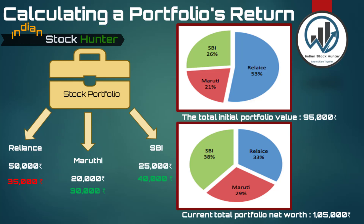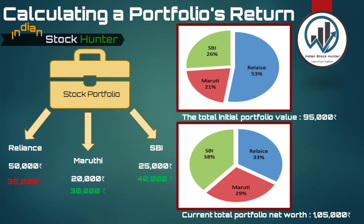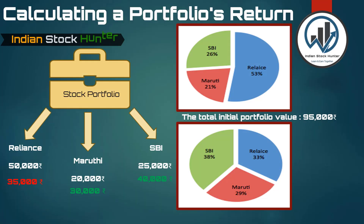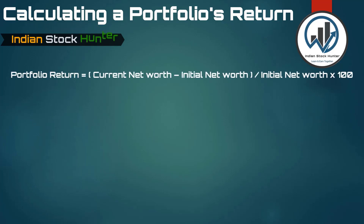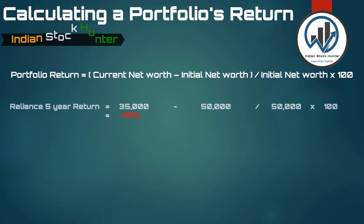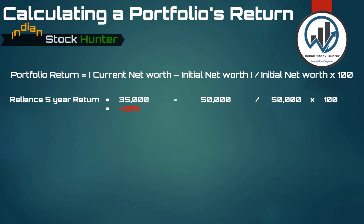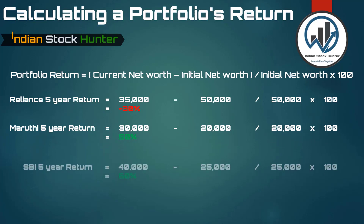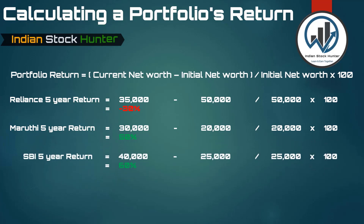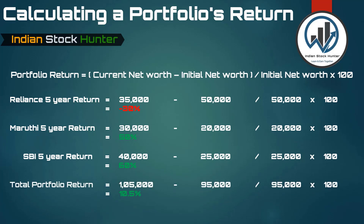We can see that Mr. Amrish will receive an additional rupees 10,000 on his investment of rupees 95,000 if he decides to liquidate all investments. Thus the current return generated by his portfolio is 10.53%, or in other words he can receive a return of 10.53% if he sells off everything and liquidates his portfolio today. You can calculate your portfolio return with the equation: Portfolio Return = (Current Net Worth − Initial Net Worth) / Initial Net Worth.